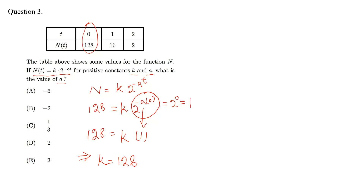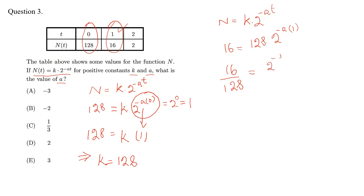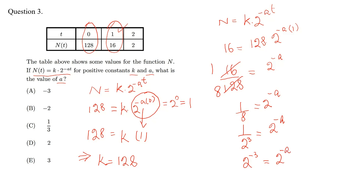Now, writing the function again with n equals 128, k equals 128, and t equals 1: 128 times 2 to the power of negative a equals 16. So 16 divided by 128 equals 2 to the power of negative a, which gives 1 over 8 equals 2 to the power of negative a. Since 1 over 8 is 2 to the power of negative 3, we get 2 to the power of negative 3 equals 2 to the power of negative a. So a equals 3.